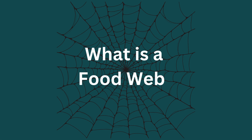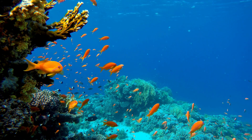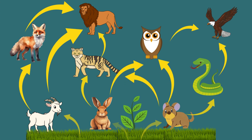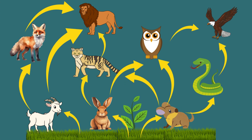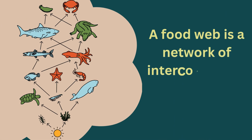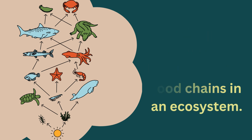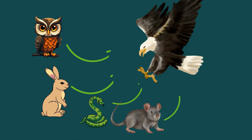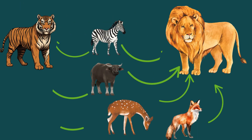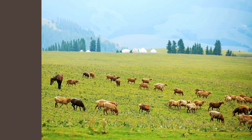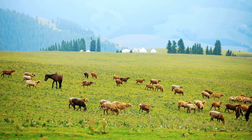What is a food web? In real ecosystems, organisms are part of many food chains. When you connect these chains, you get a food web. A food web is a network of interconnected food chains in an ecosystem. It shows how animals often have more than one food source and are prey to multiple predators. Some animals have many predators, others have few. All populations depend on each other for balance.